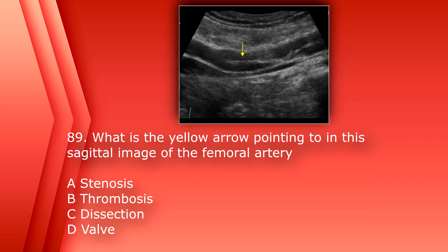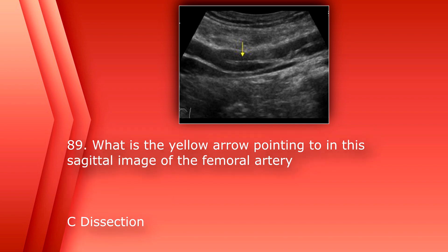Number 89: what is the yellow arrow pointing to in this sagittal image of the femoral artery? A. Stenosis. B. Thrombosis. C. Dissection. Or D. Valve. The answer is C. Dissection. You can see an intimal flap.